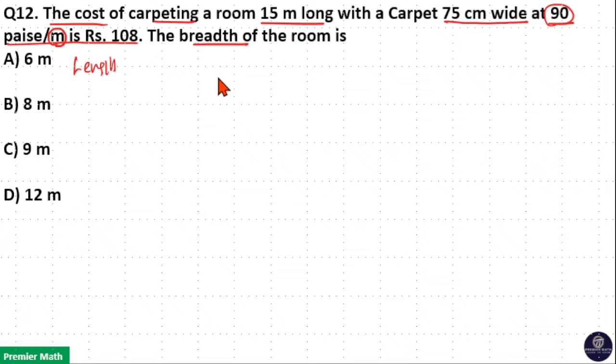That is, for 1 meter length, 90 paise, which is 0.9 rupees, is the cost. Which means total length of the carpet is equal to the total money spent for the carpet, 108, divided by 0.9 rupees per meter.